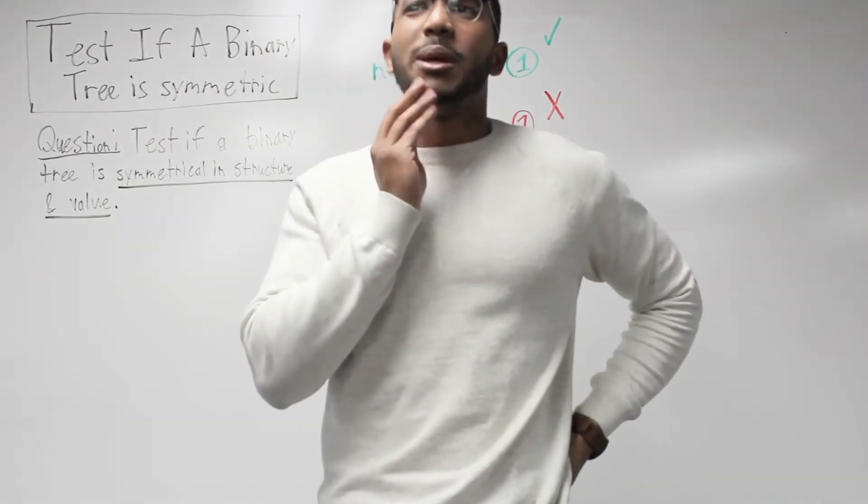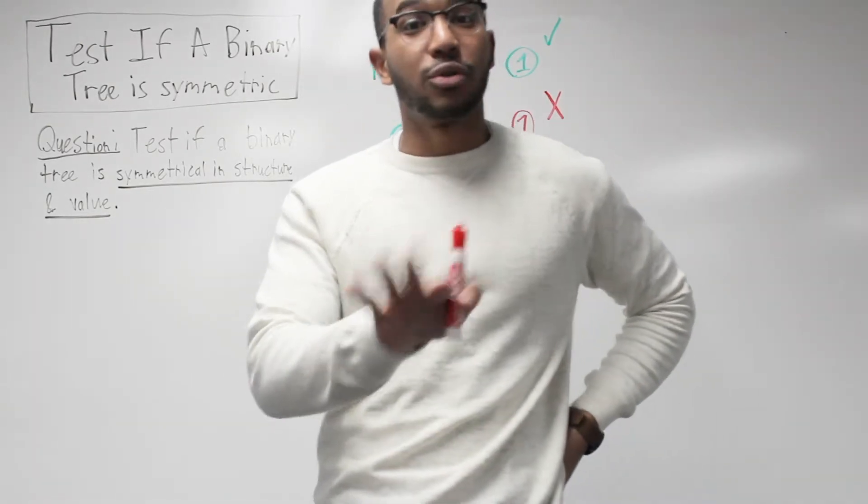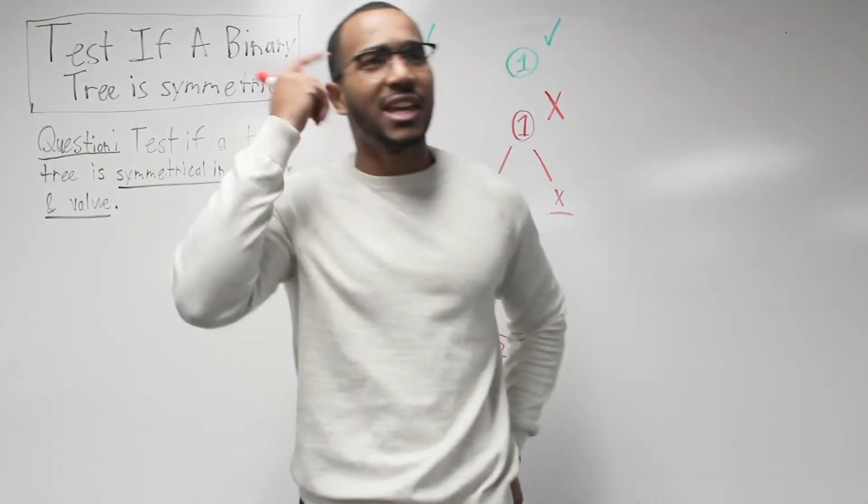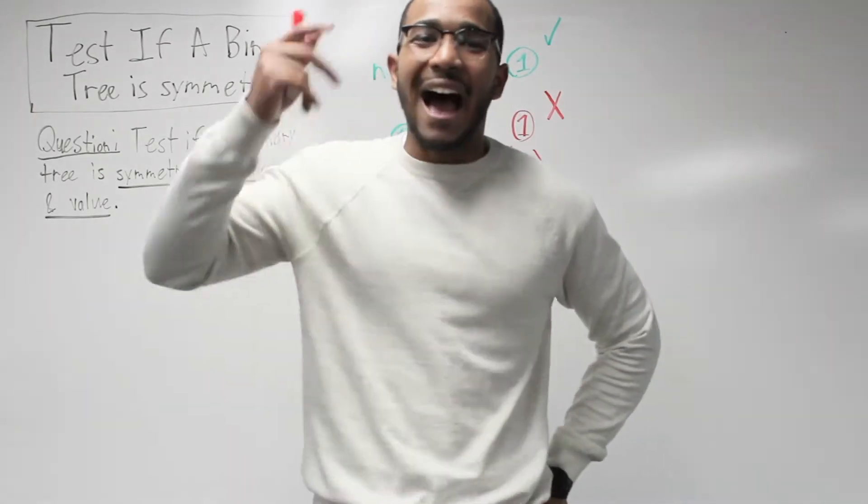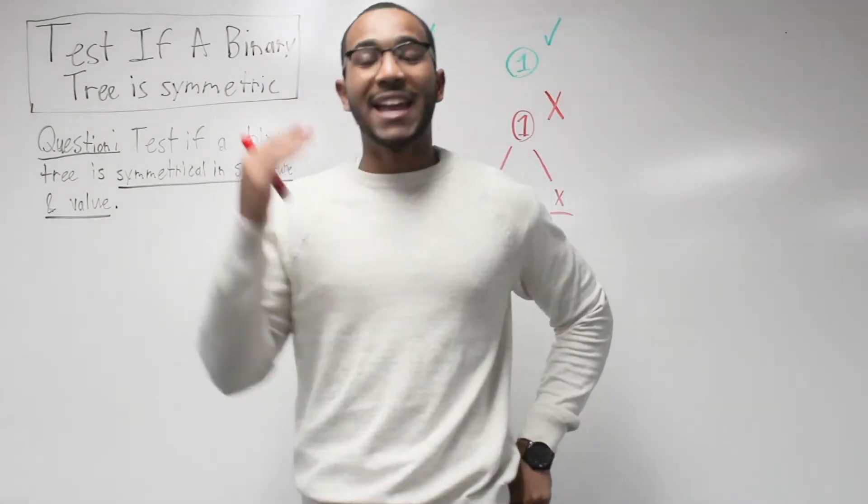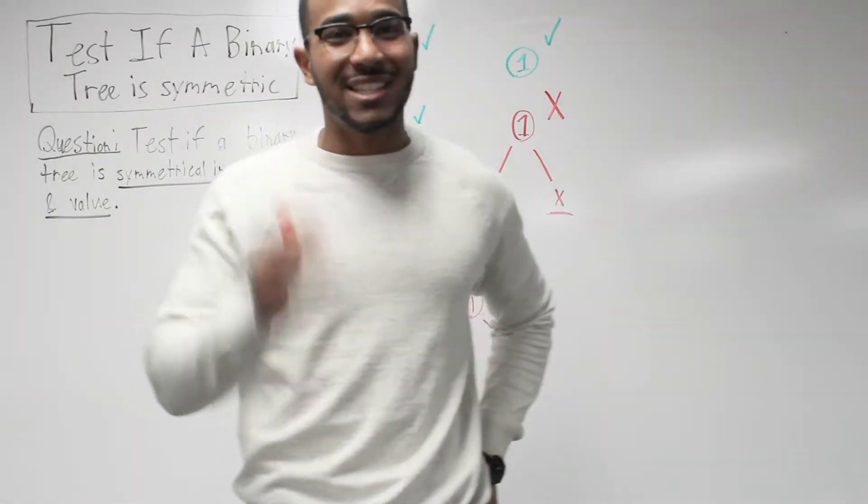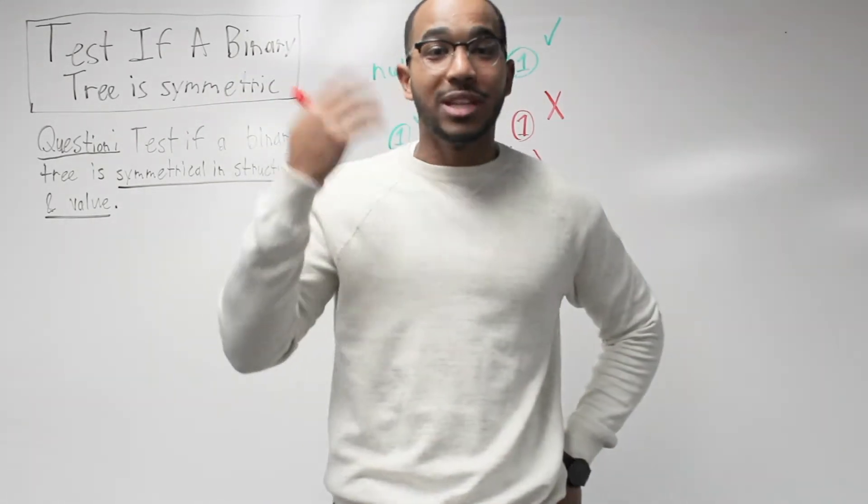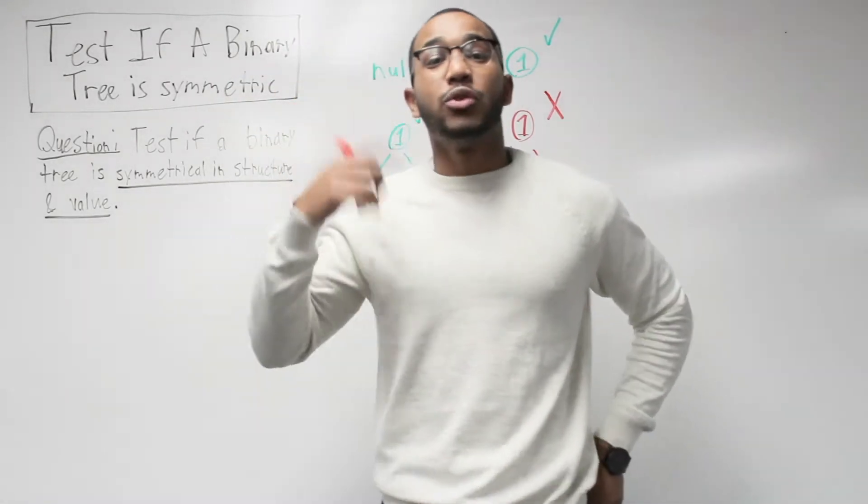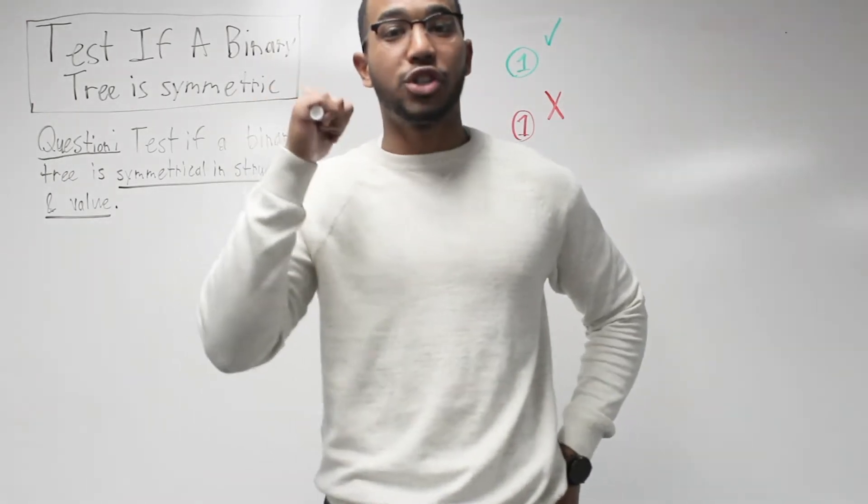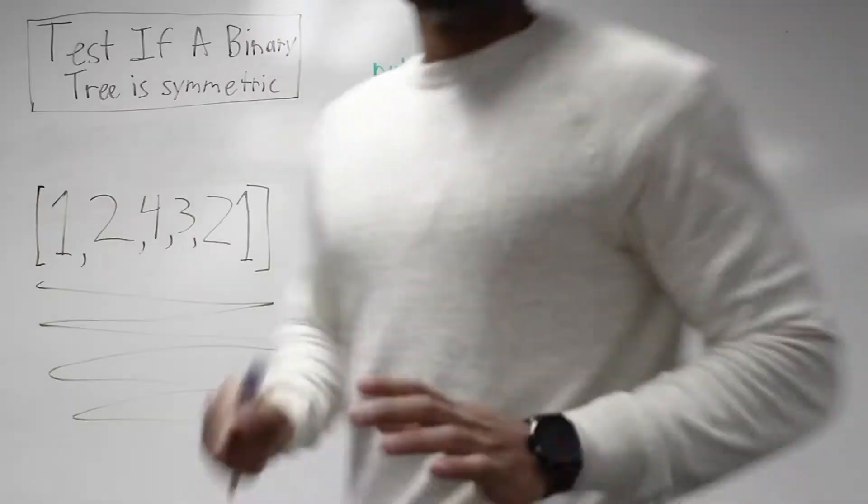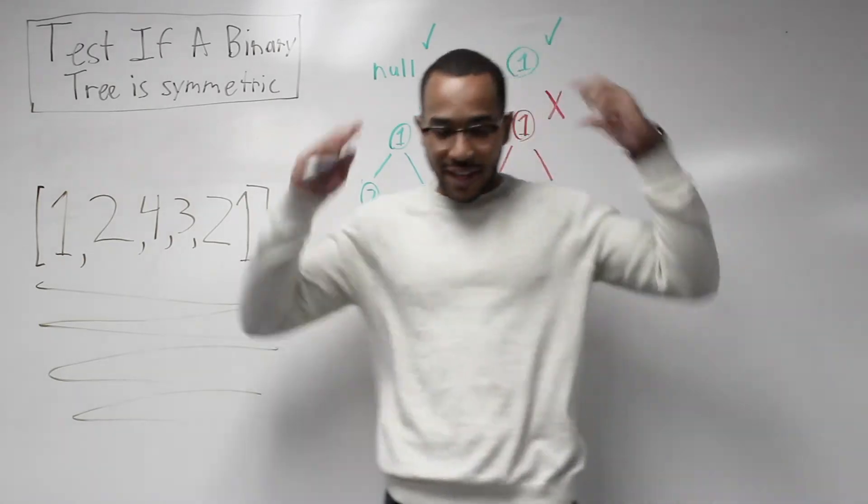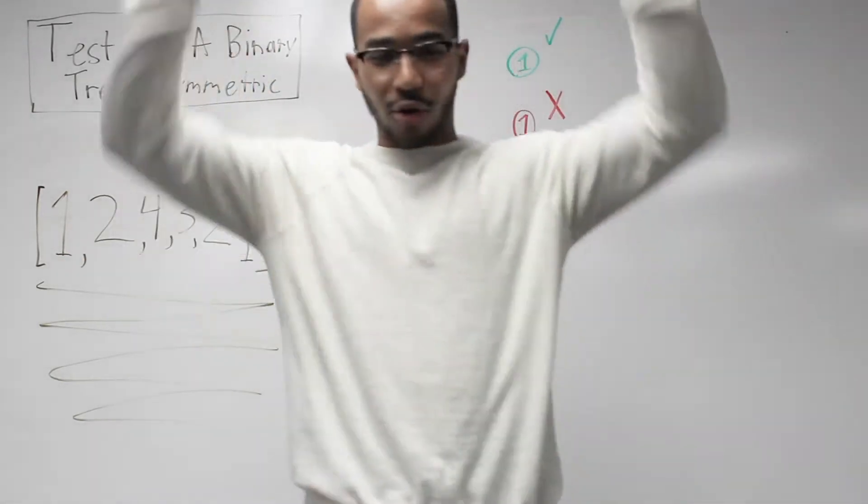This is the problem, test if a binary tree is symmetric. A lot of people ask, normally when we deal with trees it's recursive, but a lot of people have problems thinking how do I traverse a tree, how does this recursion pan out? Let me give you an example to show you how you need to think about this problem so that you understand how the recursion and traversal will happen.